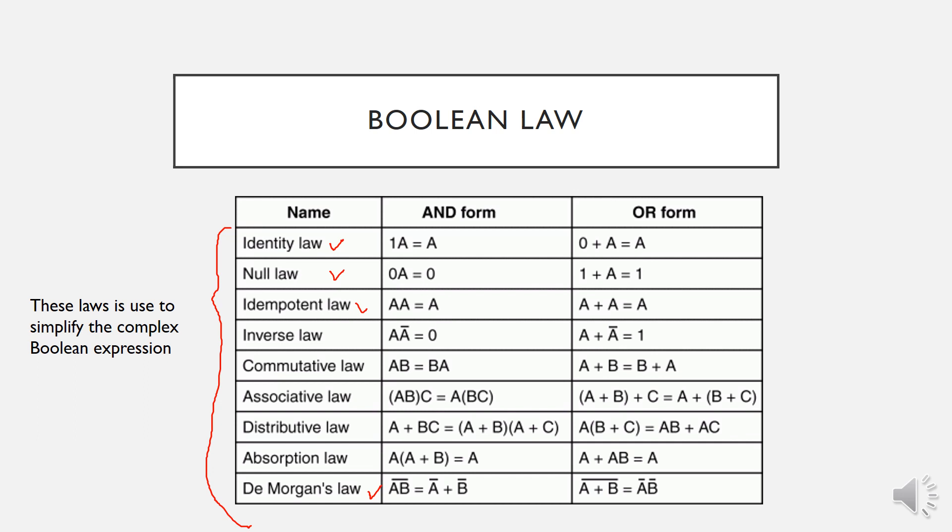As an example, identity law states that any variable that is ANDed with one is equal to that variable itself, or any variable that is ANDed with zero is equal to zero. This is some of the examples of rules that will be utilized in order for us to simplify our Boolean expression.